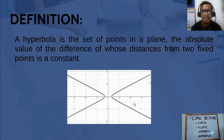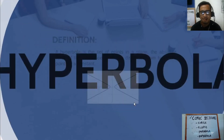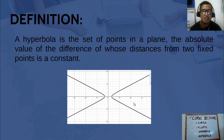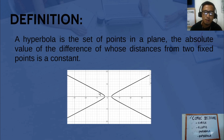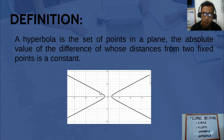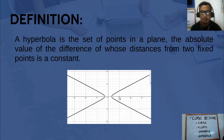A hyperbola is the set of points in the plane such that the absolute value of the difference of the distances from two fixed points is a constant. For example, given two fixed points, if we take any point on the curve, the distance from that point to the first fixed point minus the distance from that point to the second fixed point — taking the absolute value of that difference — is constant. And that is a hyperbola.